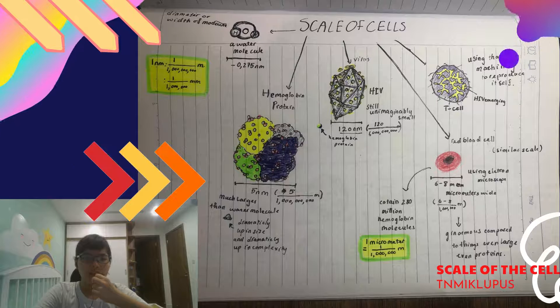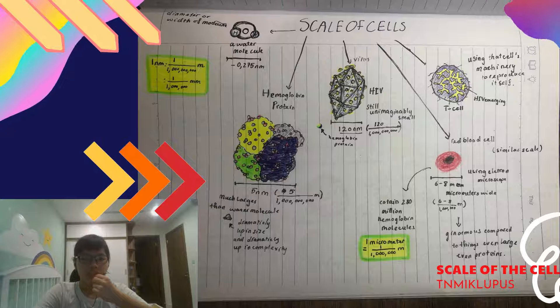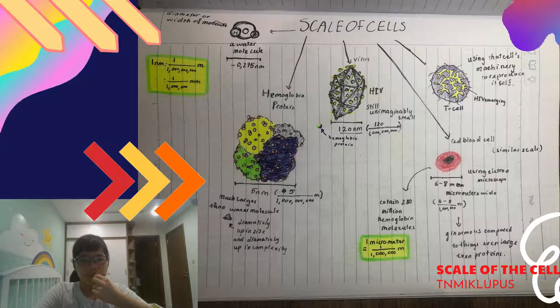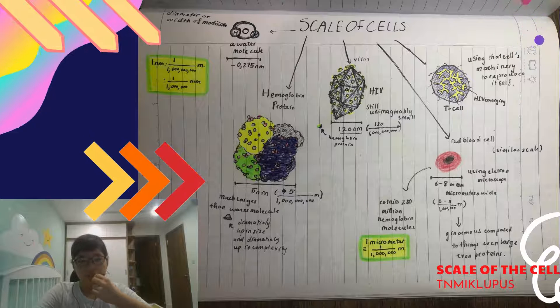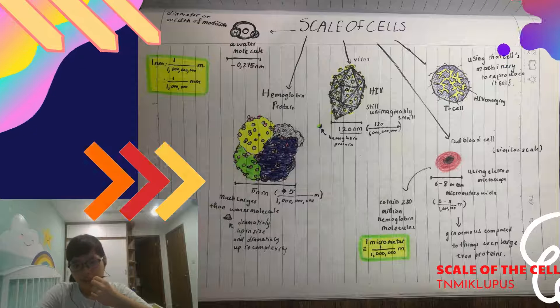Next up, this is our friend right over there, the hemoglobin protein. And the width of the hemoglobin is 5 nanometers. That's about 5 billionths of a meter.